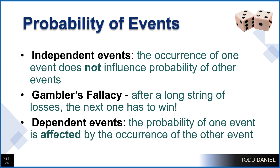If one event is affected by the occurrence of another event, those events are dependent. For any given flip of the coin, if the coin comes up heads, it now has a zero probability of coming up tails — in that sense, heads and tails are dependent for a single flip, but that doesn't change the probability for the next flip. If two events are correlated, then they will be dependent, assuming they're not correlated at a value of zero.